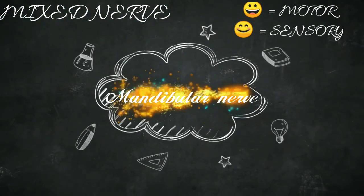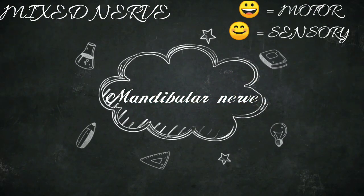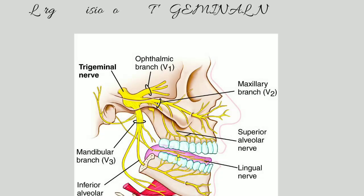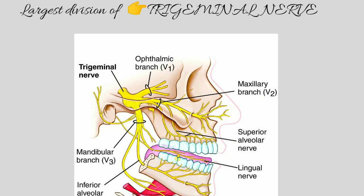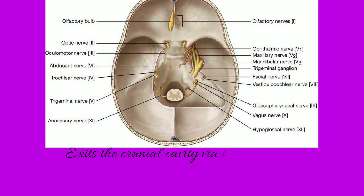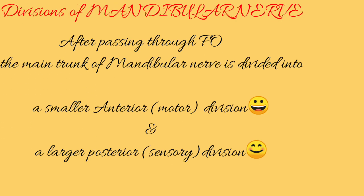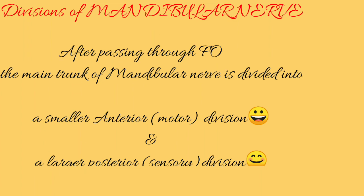Mandibular nerve is a mixed nerve and the largest division of the trigeminal nerve. It exits the cranial cavity through the foramen ovale. After passing through the foramen ovale, the main trunk of the mandibular nerve is divided into a smaller anterior division and a larger posterior division.